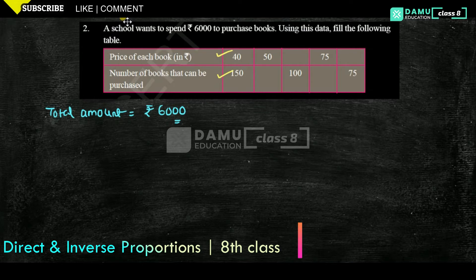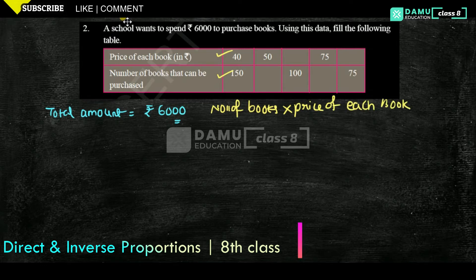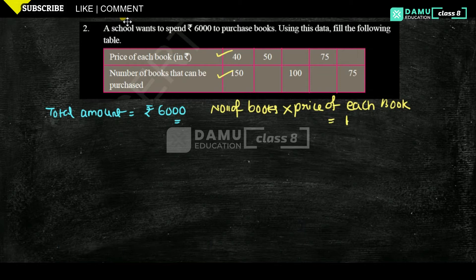Number of books multiplied by price of each book equals total amount. So number of books is 150 and each book costs 40 rupees, giving 6,000 rupees. To find number of books when price is 50: number of books equals 6,000 divided by 50.